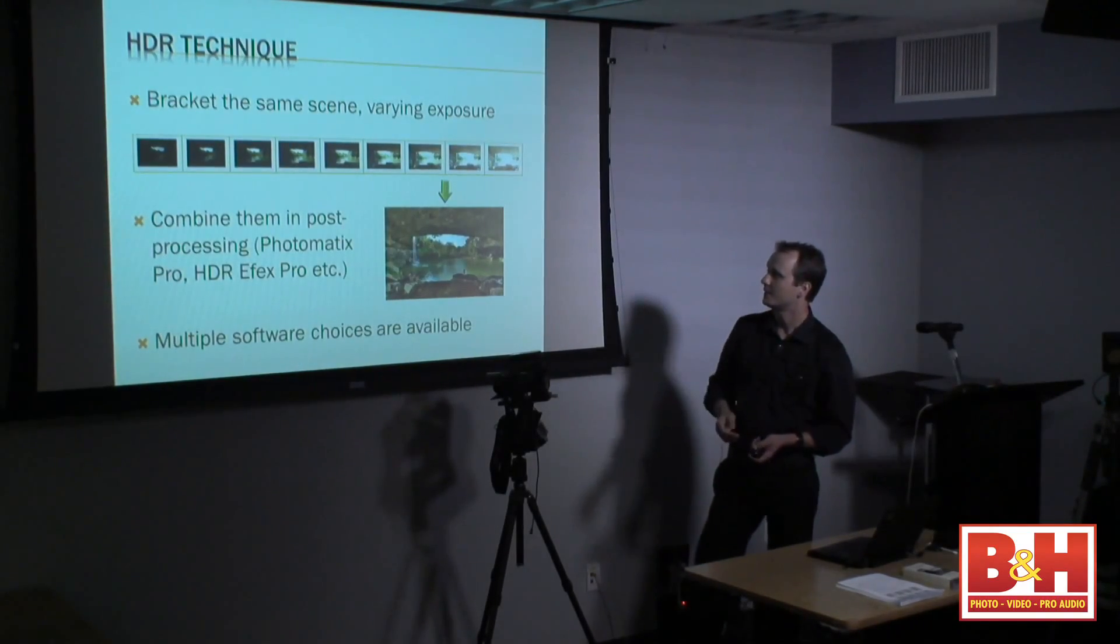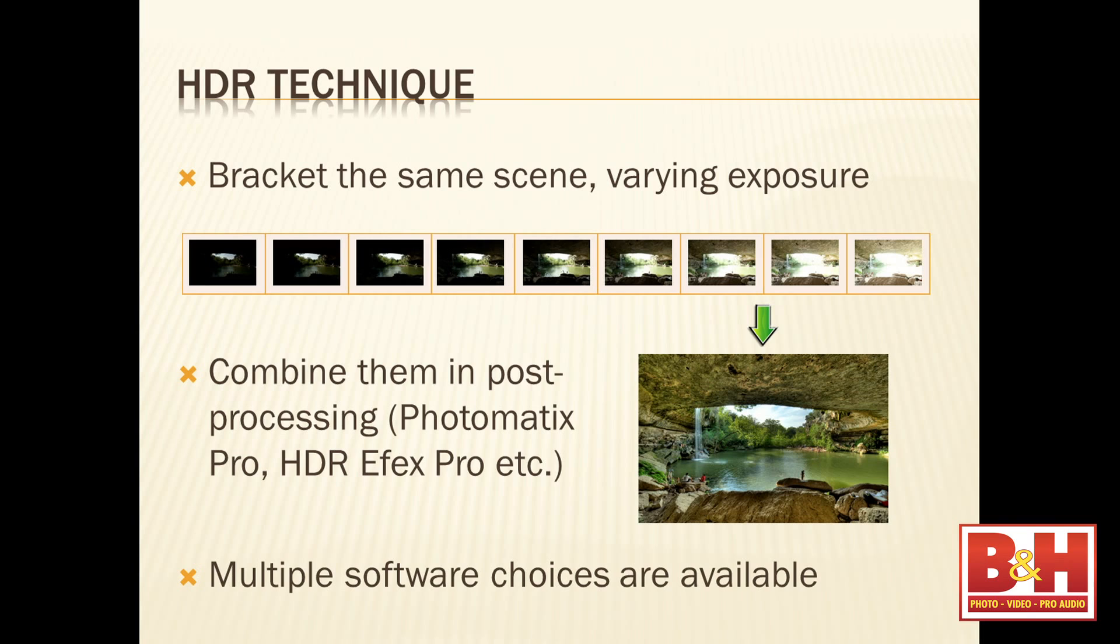Here's the basic technique for those who have not seen this before. You take a whole bunch of images, in this case nine, ranging from dark to bright. Then you merge them into a single high dynamic range image in a software of choice. There's plenty of software available. Some people prefer to do this in Photoshop. I prefer Photomatix Pro. They've been around for years, have the best algorithms. HDR FX Pro is another company that just came around. Multiple other software choices are available.